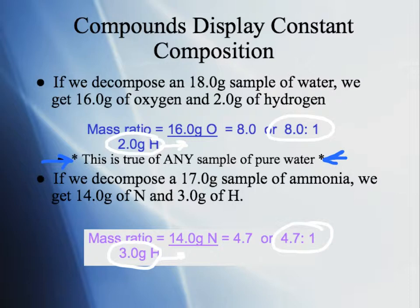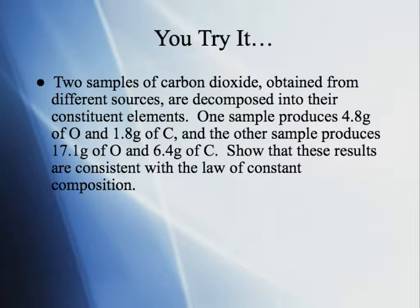That ratio is the constant composition. Ammonia is NH3, and water is H2O. The law of constant composition says that in ammonia, there are always three hydrogens to one nitrogen, and in water, there are always two hydrogens to one oxygen.